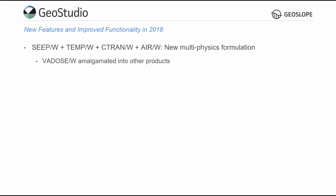The multi-physics analysis functionality removes the need for VADOS-W as a standalone product. VADOS-W was ultimately a multi-physics analysis, including water, air, and heat flow. The functionality of VADOS-W is now available in SeepW, TempW, and CTRAN-W, which are included in the GeoStudio VADOS product bundle.